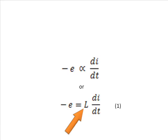Where L is the constant of proportionality and this L is defined as the self inductance of the coil or solenoid. The L determines how much EMF will be induced in a coil for a specific rate of change of current through it.